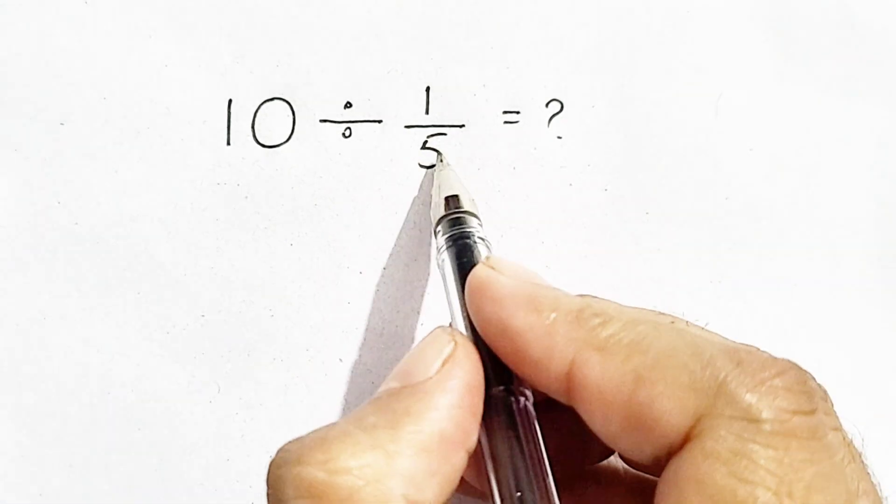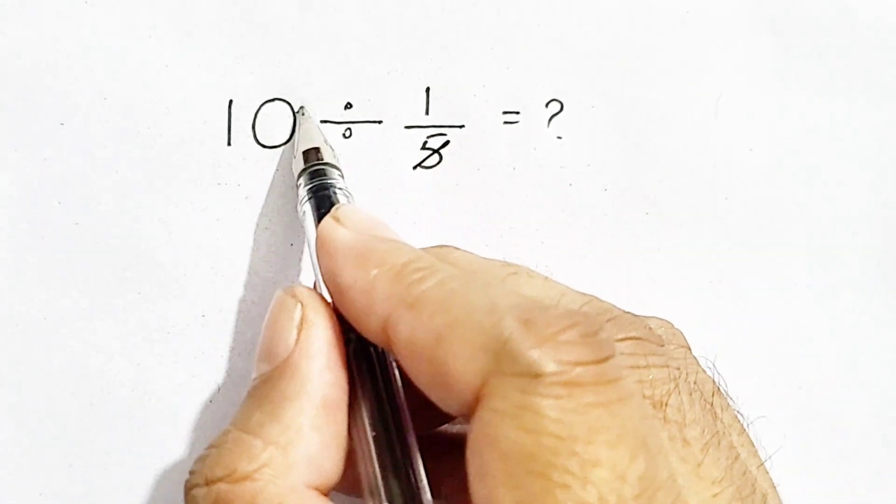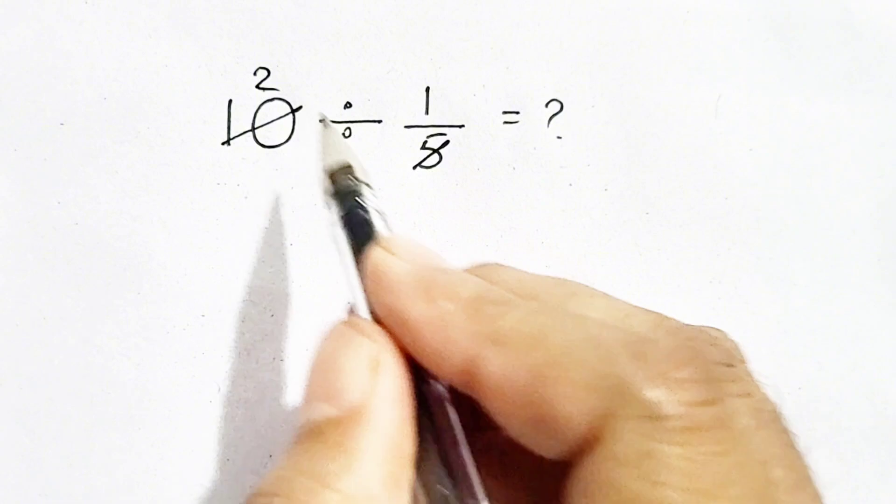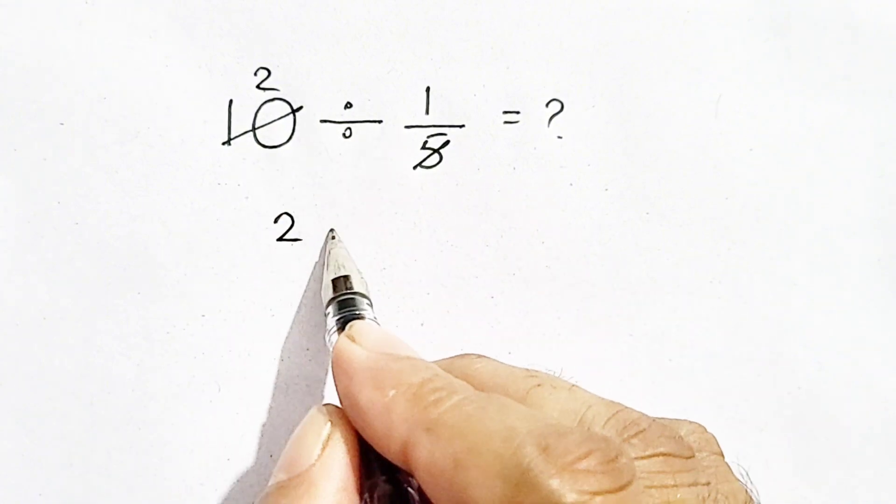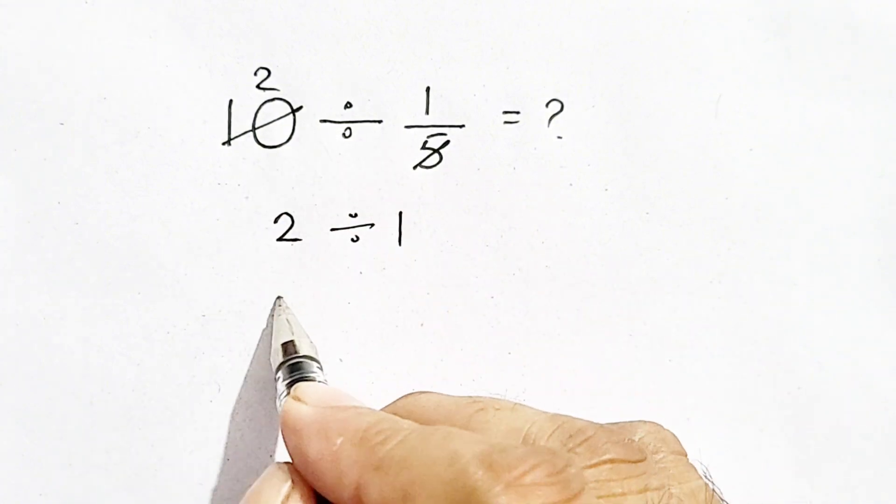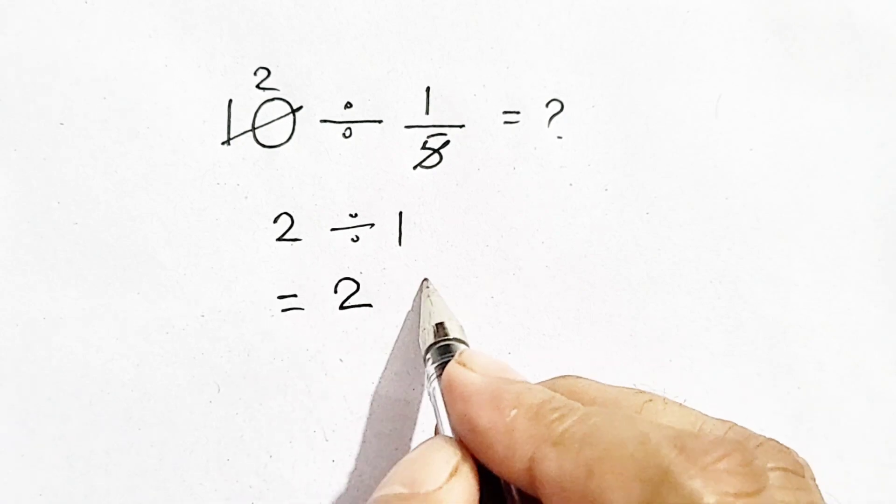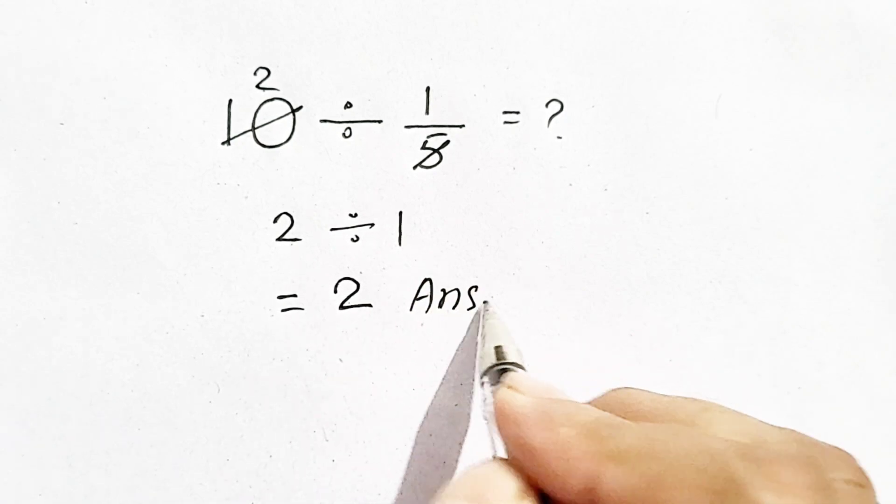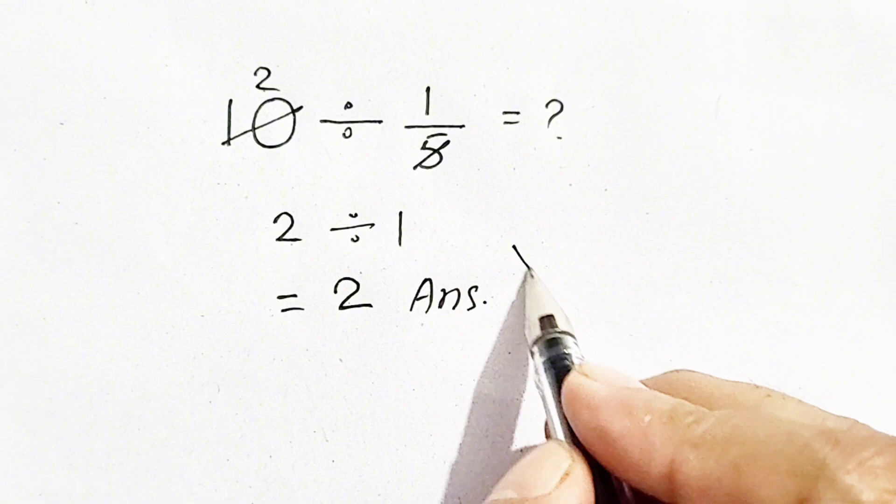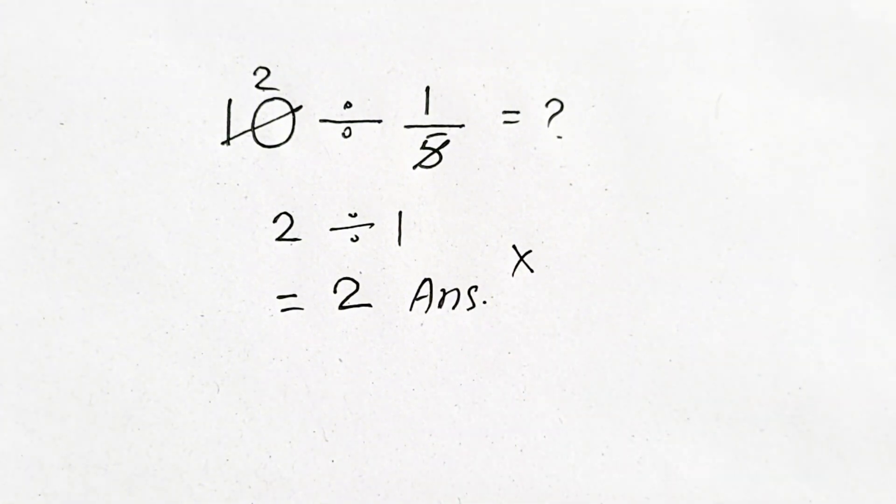Mostly people cancel 5 and 10, so 2 divided by 1 will equal 2, which will be their answer, but it is not correct.